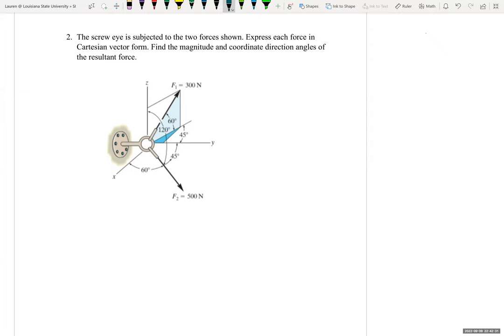It says the screw I is subjected to the two forces shown. Express each force in Cartesian vector form. Find the magnitude and coordinate direction angles of the resultant force.